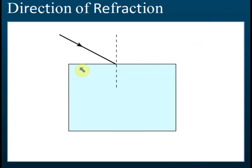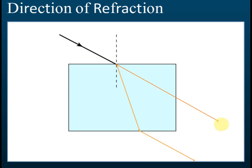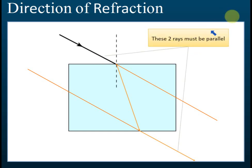For a rectangular prism, the light is first refracted closer to the normal entering the glass, then refracted away from the normal exiting back into air. Make sure that the incident ray and the emergent ray are parallel — if you extend these two lines, they are parallel. If they are not parallel, the answer is wrong. First closer to the normal, then away from the normal, and the two lines must be parallel.